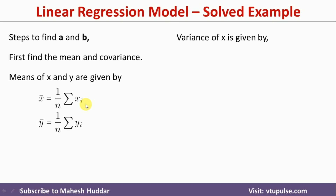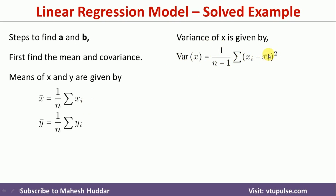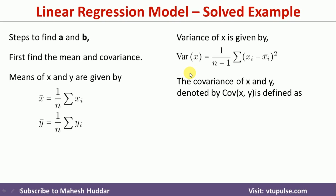Now we need to find the variance of x. The variance of x is always equivalent to 1 divided by (n minus 1), times the summation of (x_i minus the mean of x), squared. Once you solve this equation, we will get the variance of x.